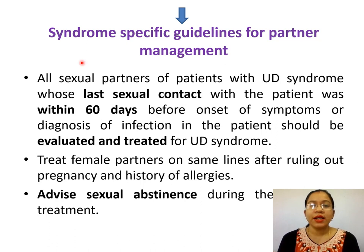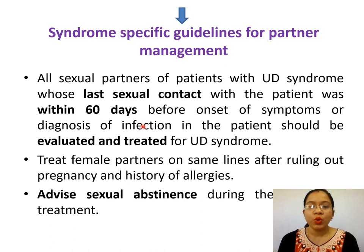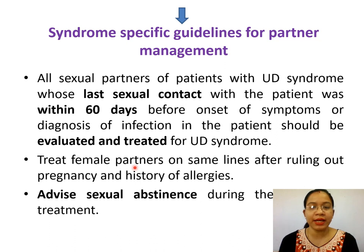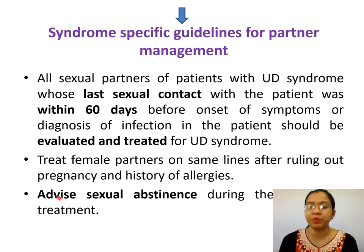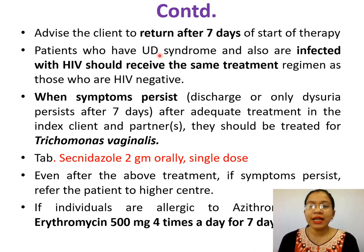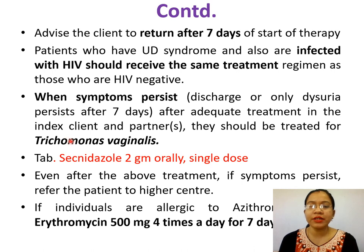Syndrome-specific partner management: track all sexual partners of patients with urethral discharge whose last sexual contact was within 60 days, find them, evaluate, and treat them in the same lines after ruling out pregnancy and history of allergy. During treatment, advise sexual abstinence. Ask the client to return after 7 days. If symptoms persist beyond 7 days, refer to higher centers or consider Trichomonas vaginalis—give tablet secnidazole 2 g orally single dose.